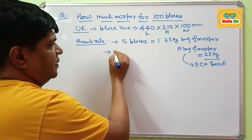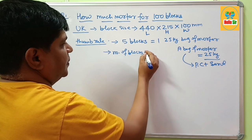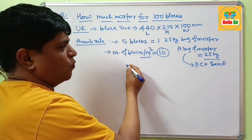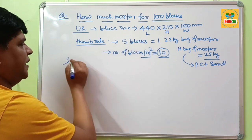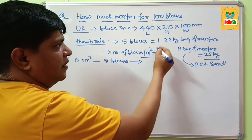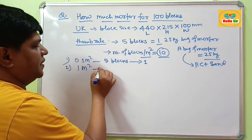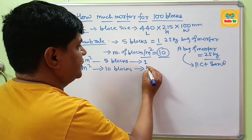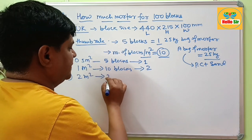The number of blocks per square meter is about 10 blocks. It means for 1 square meter area of block wall, you need about 10 blocks of this size. 5 blocks have an area of 0.5 square meter, and for those 5 blocks you will need 1 bag of mortar. For 1 square meter area of block wall with 10 blocks, you will need about 2 bags of mortar. And for 2 square meter area of wall with 20 blocks, you will need about 4 bags of mortar.